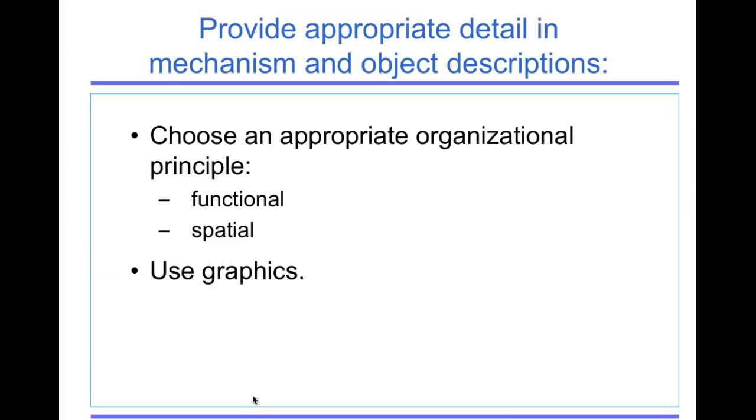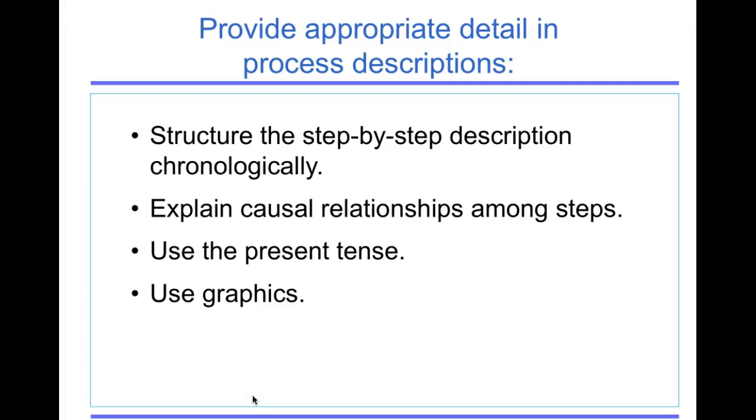Provide appropriate detail and mechanism and object descriptions. Choose an appropriate level of organization or choose an appropriate organizational principle. Is it functional or spatial? And use graphics. Provide the appropriate detail in process descriptions. Structure the step-by-step description chronologically. First this, then this. Explain causal relationships among the steps. Use the present tense and use graphics.